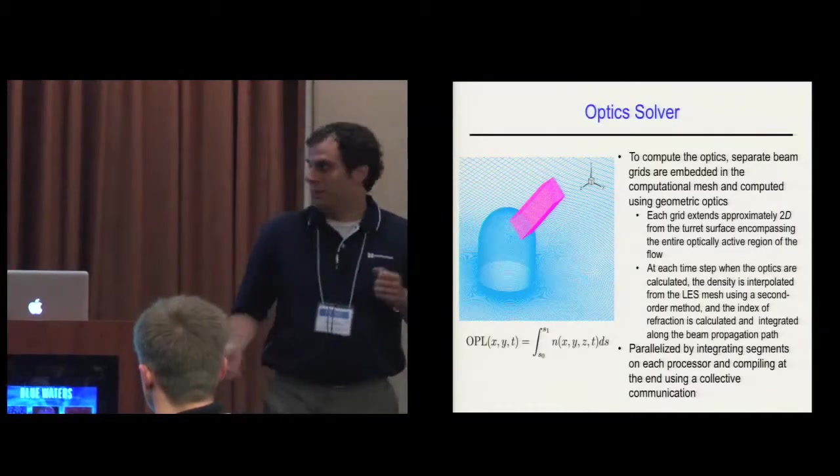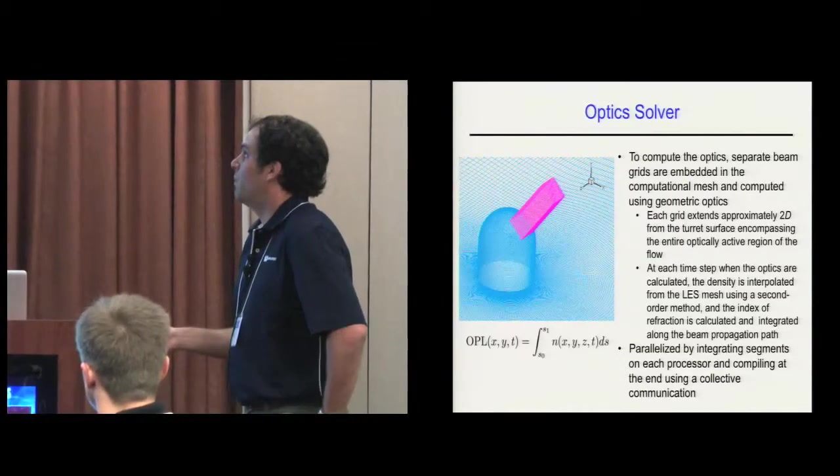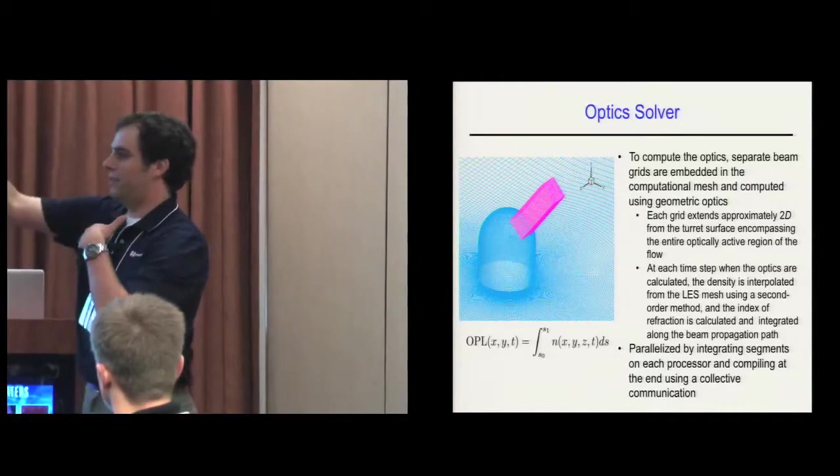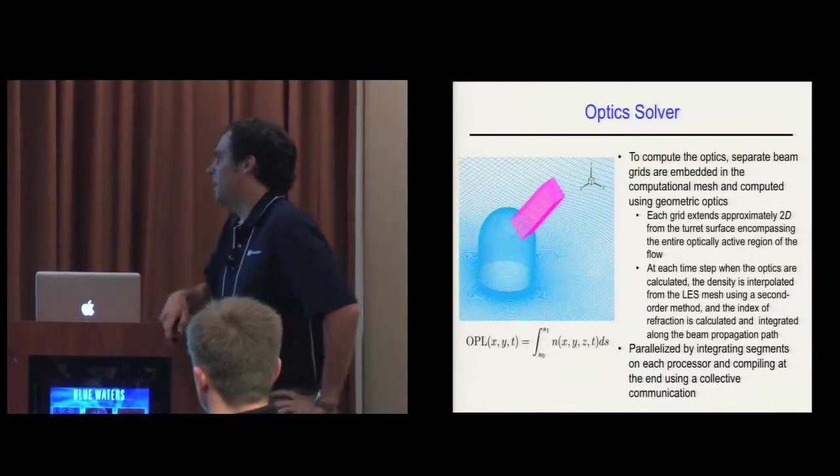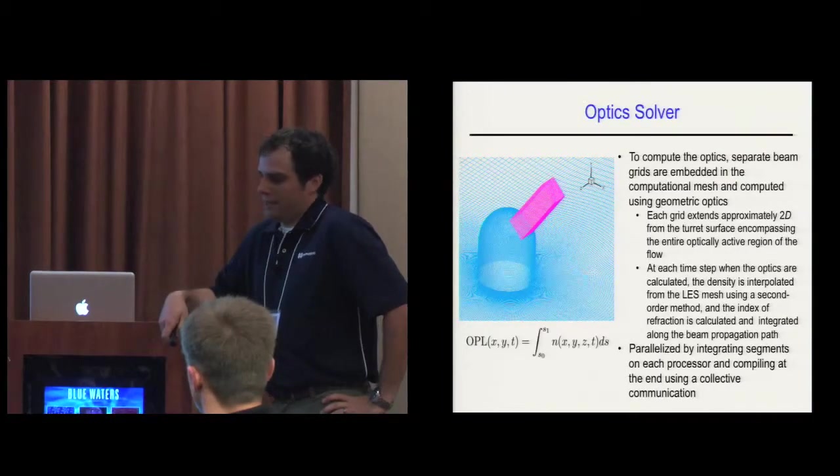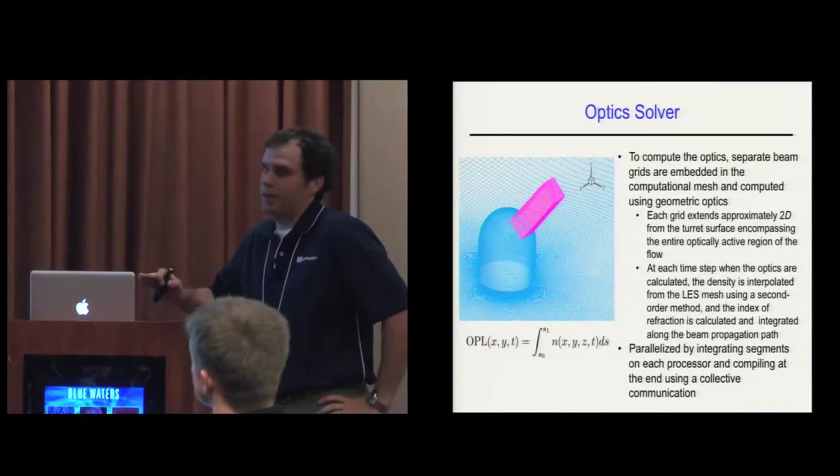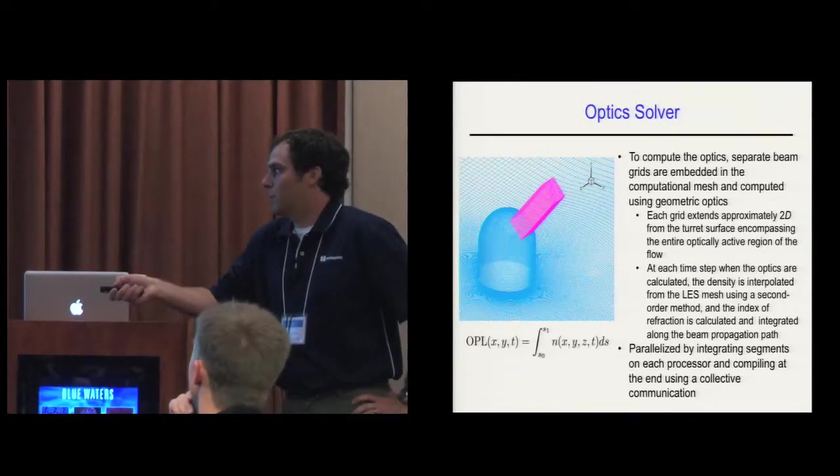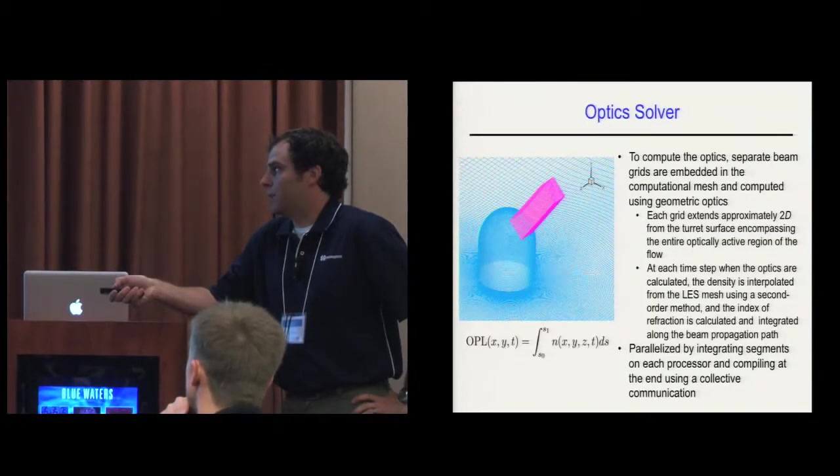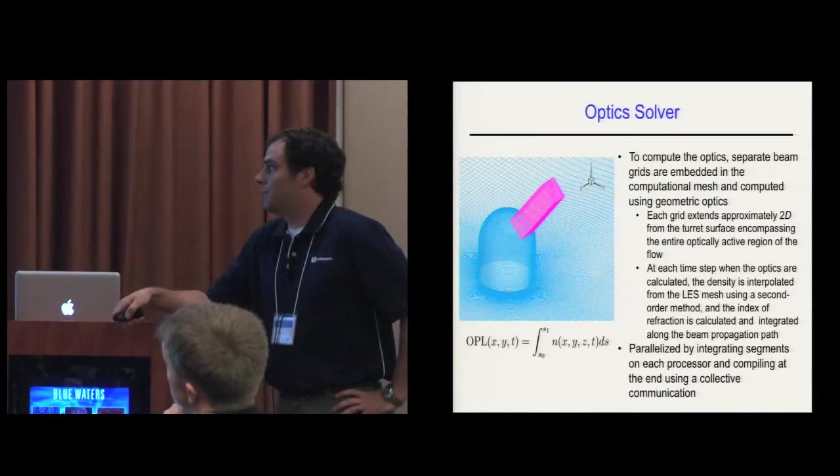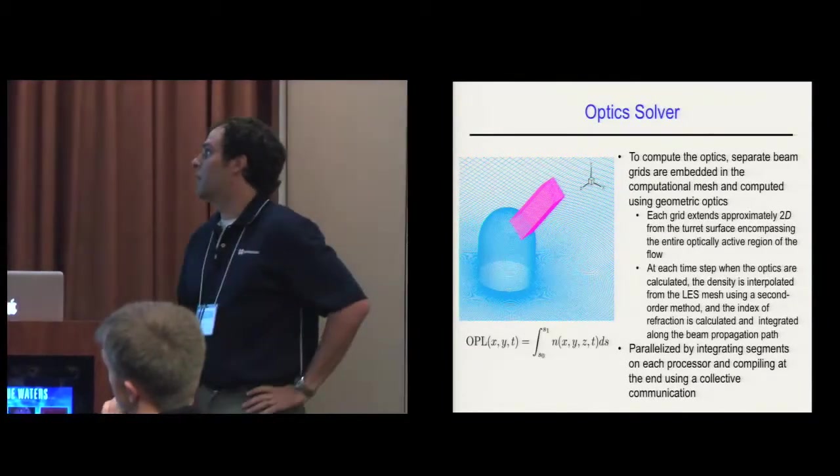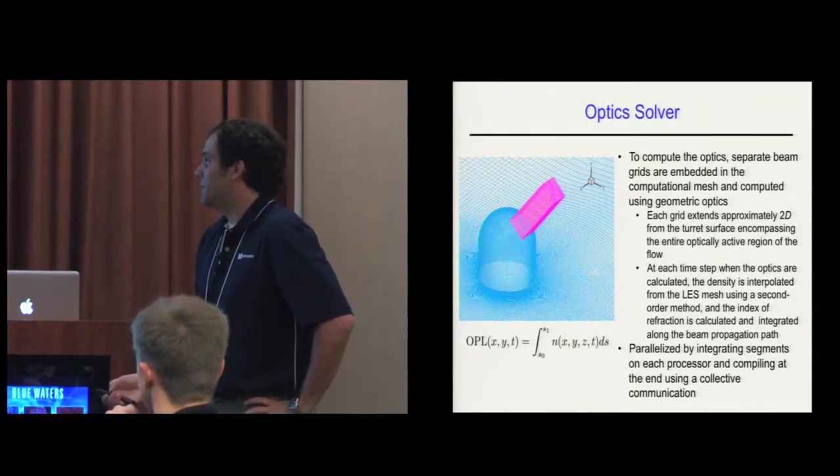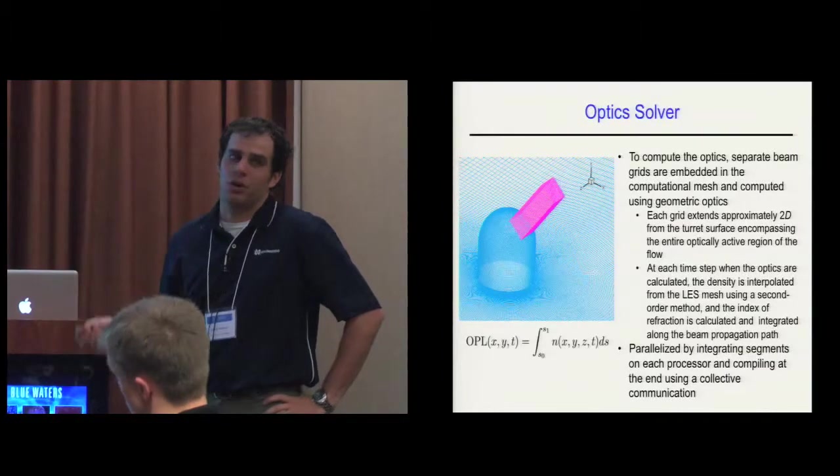For the optics solver, we have to use a separate beam grid for every single viewing angle that we want to look at because we're using geometric optics to project this beam outward. The optical path length, or OPL, is integrated using geometric optics. The OPD, which is the spatial mean removed OPL, gives you a relative phase distortion of the wave front. Each grid extends about 2D out from the turret surface.